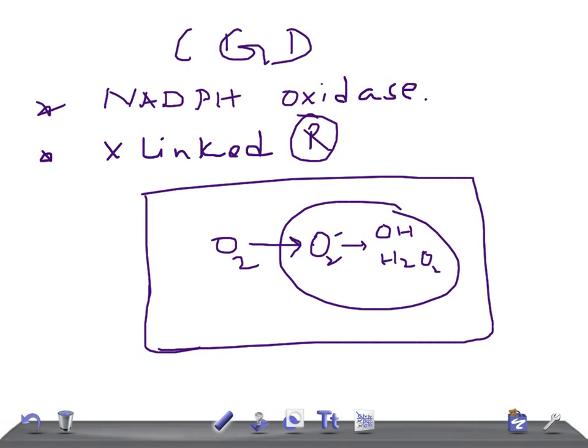To kill an organism, you need three things: either you produce hydroxyl radical, or you produce hydrogen peroxide (H2O2), or you produce hypochlorite — these are the oxygen-dependent killing mechanisms. There is also an oxygen-independent mechanism, but it's very weak to control infection.